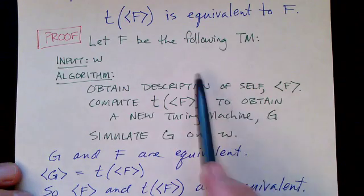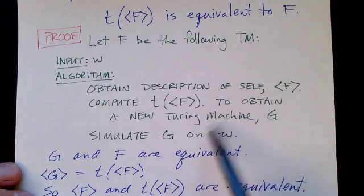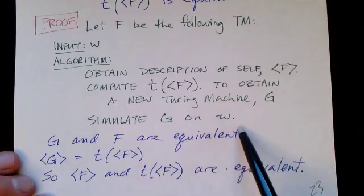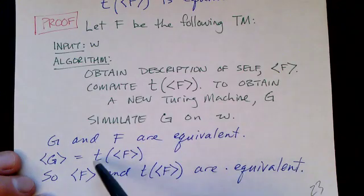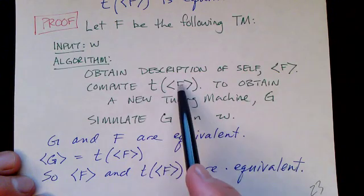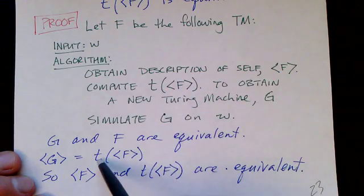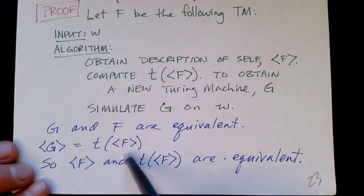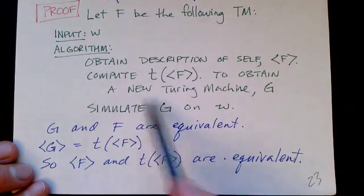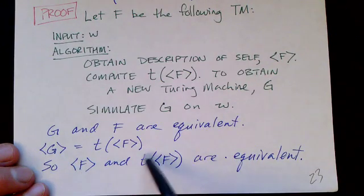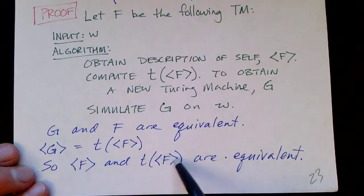You can see how G and F are equivalent. G was obtained by applying t to the description of F. So t takes F and gives a new Turing machine, but they're equivalent because all F does is simulate G on w, so F does the same thing as G does. So F and t(F) are equivalent.